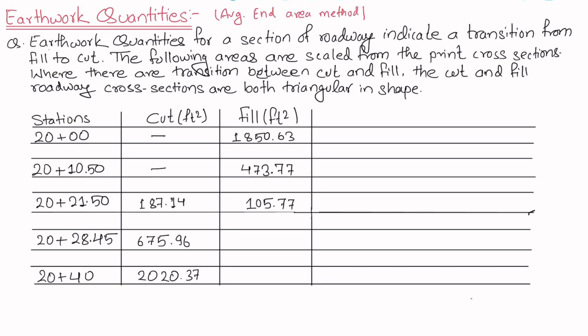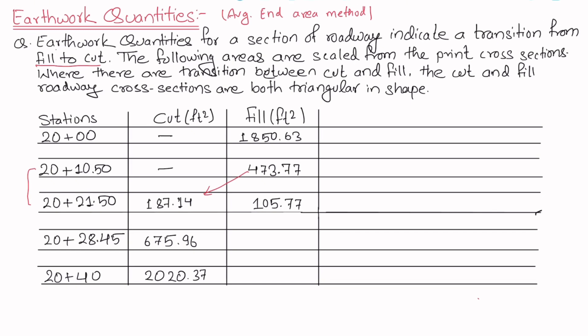Here we have a question: earthwork quantities for a section of roadway indicate a transition from fill to cut. At station 20+10.50 and station 20+21.50 there is a transition from fill to cut. The following areas are scaled from the cross sections. Where there is a transition between cut and fill, the cut and fill roadway cross sections are both triangular in shape.